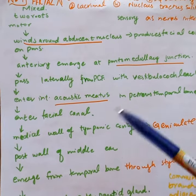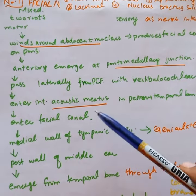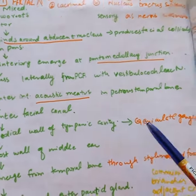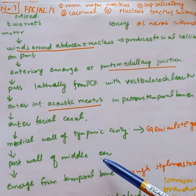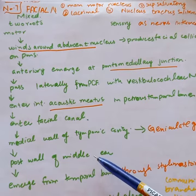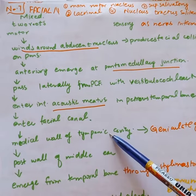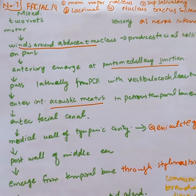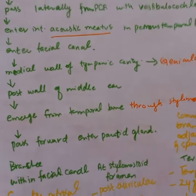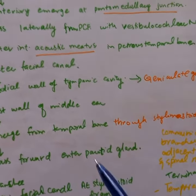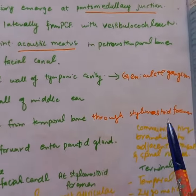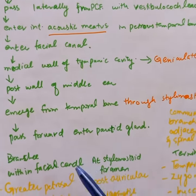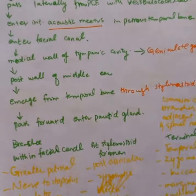It then enters the external acoustic meatus into the facial canal, passing through the medial wall of the tympanic cavity, where the geniculate ganglion is located, then along the posterior wall of the middle ear. Finally, it emerges from the temporal bone through the stylomastoid foramen and enters the parotid gland.